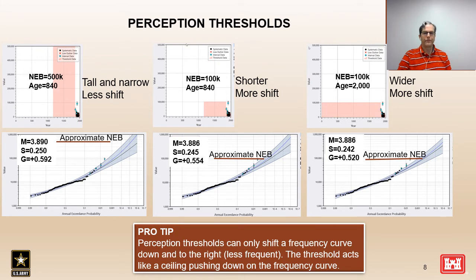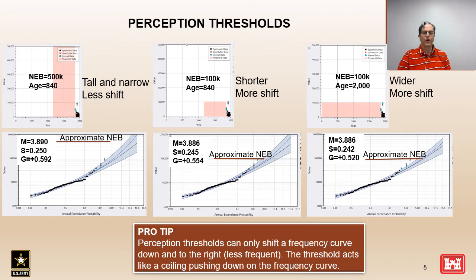In the final set of plots on the far right we have the short perception threshold with a magnitude of 100,000 CFS and an expanded age of 2,000 years — a threshold that is relatively short and relatively wide. This has the largest influence on the computed curve, with standard deviation and skew reduced even further and the curve shifting farther to the right. As a general rule of thumb, perception thresholds will only shift a frequency curve down and to the right — making floods less frequent. Think of the threshold as a ceiling pushing down on the frequency curve.